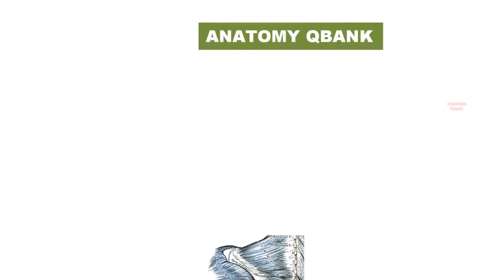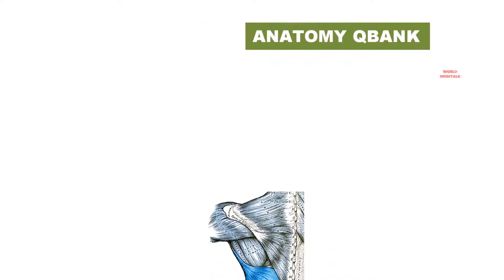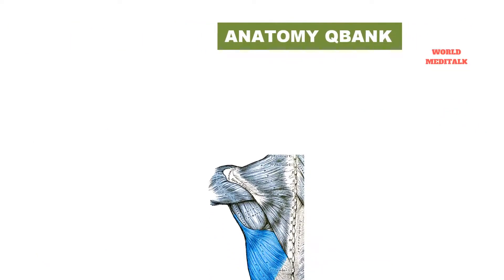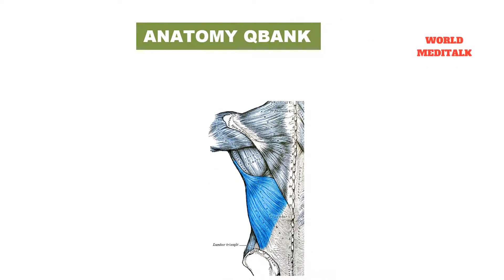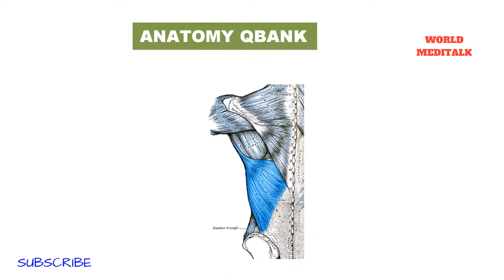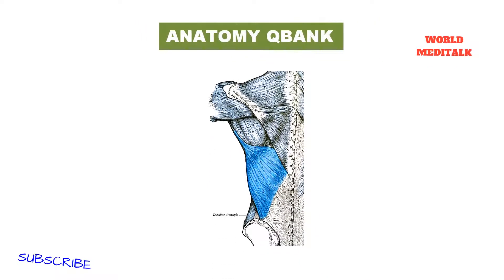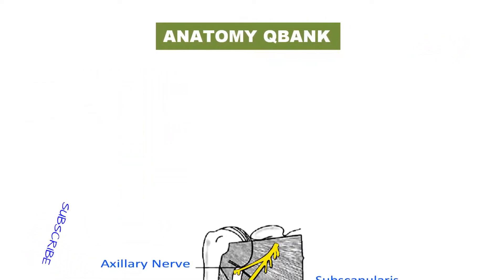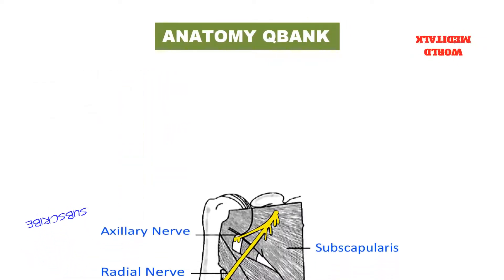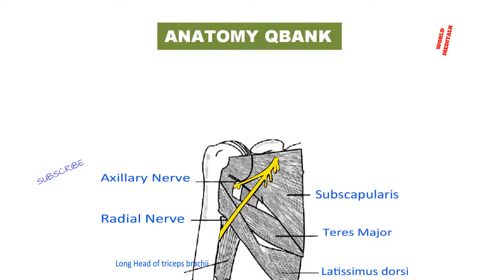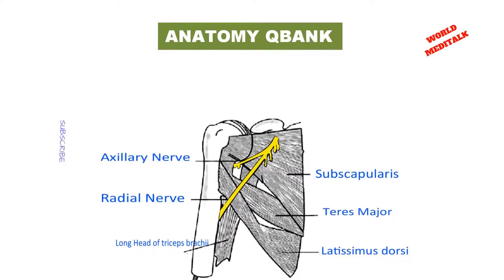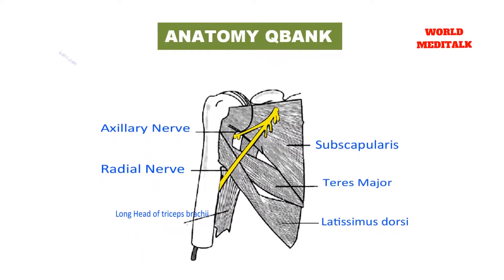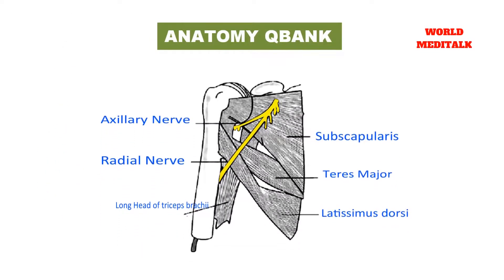The answer is latissimus dorsi muscle. The latissimus dorsi makes the posterior axillary fold, so it is easy to see why this muscle would be injured following a wound to the posterior axillary fold. Latissimus dorsi is important for medial rotation, extension, and adduction of the arm — the patient's symptoms fit with injury to this muscle.